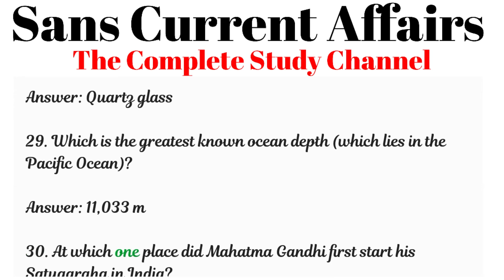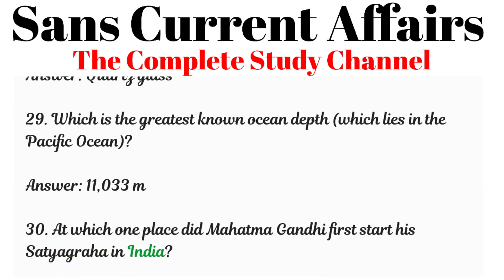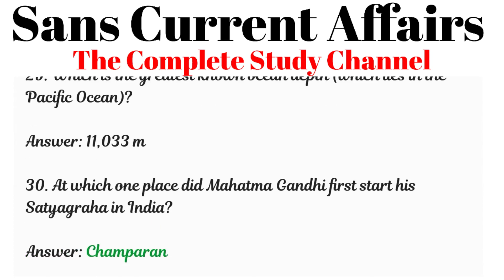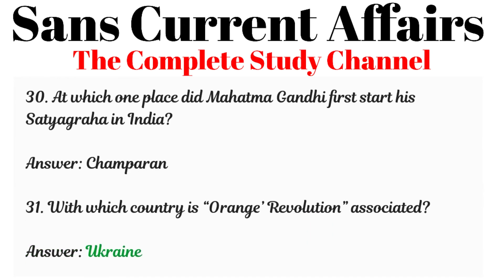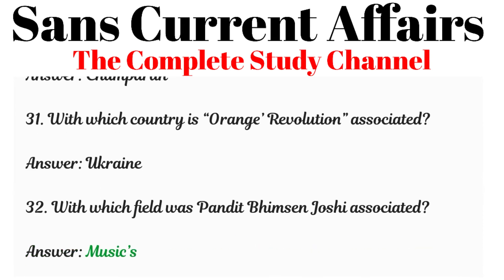Question 30: At which place did Mahatma Gandhi first start his Satyagraha in India? Answered: Champaran. Question 31: With which country is the Orange Revolution associated? Answered: Ukraine. Question 32: With which field was Pandit Bhimsen Joshi associated? Answered: Music.